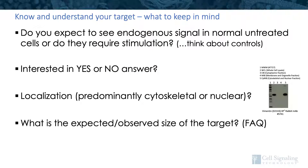In regards to knowing and understanding your target, these are questions you should be asking yourself. You need to understand the target protein expression levels in your potential samples. Do you expect to see endogenous signal or do they require stimulation? Are you interested in a yes or no answer — is your protein present or not? If your target is more localized, like in the cytosol or nucleus, do you need to fractionate your lysate? And what's the expected or observed size of your target?